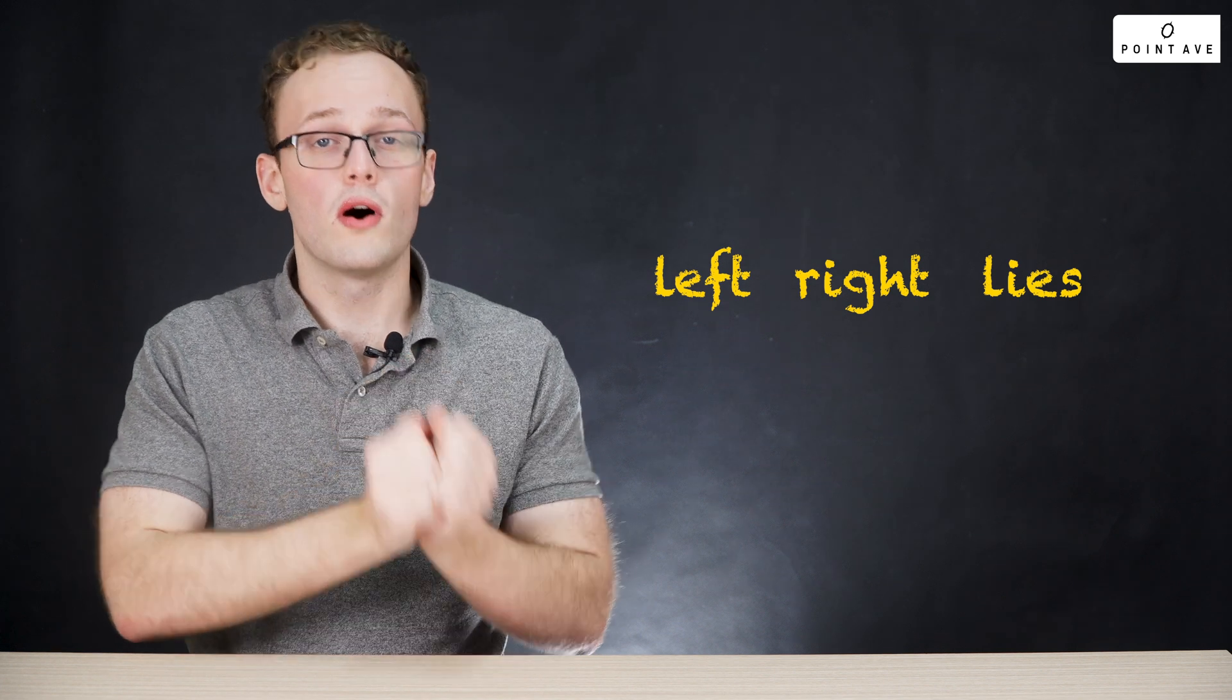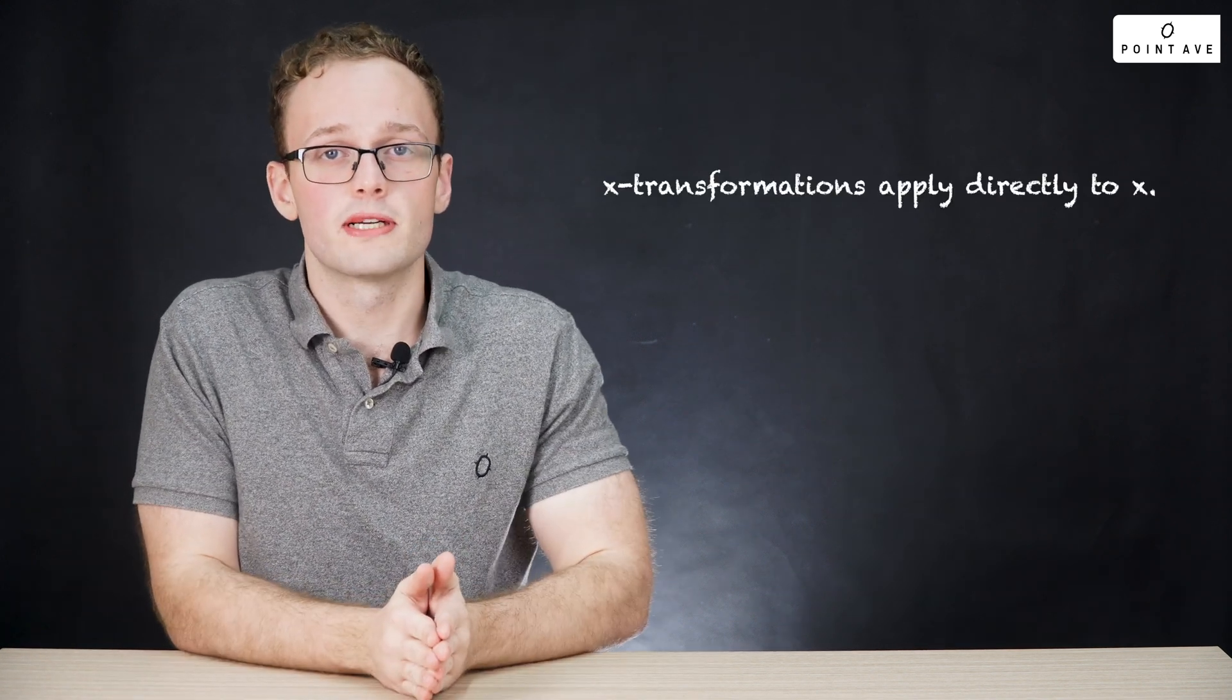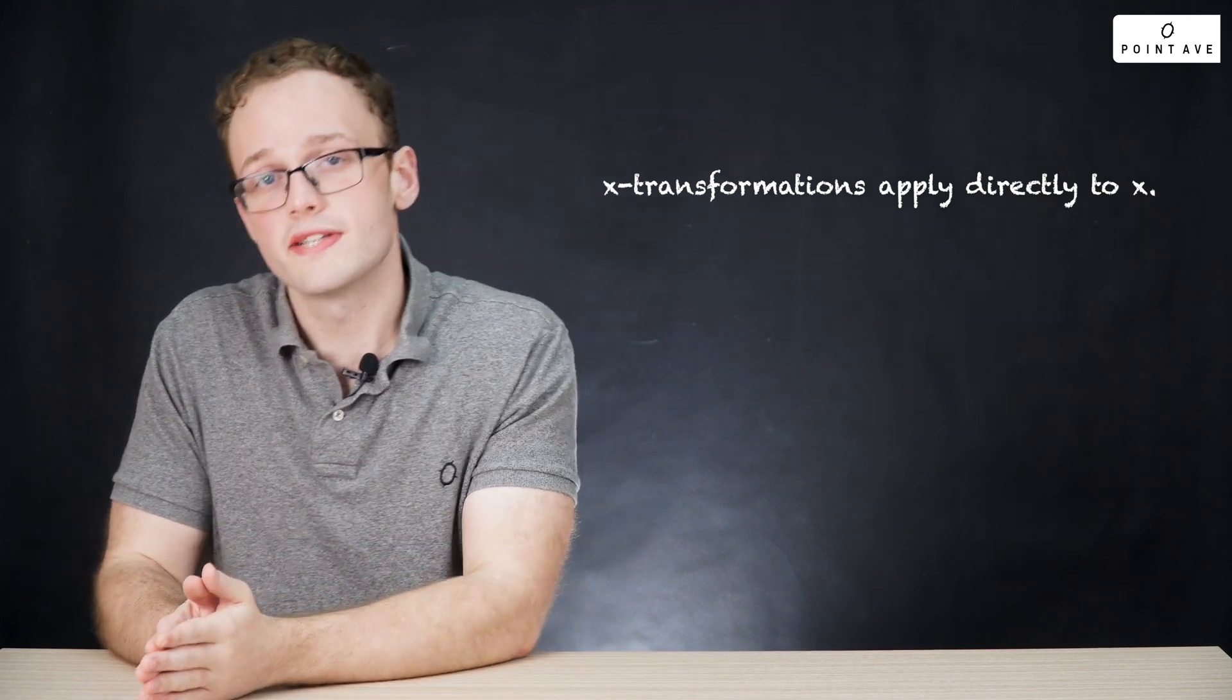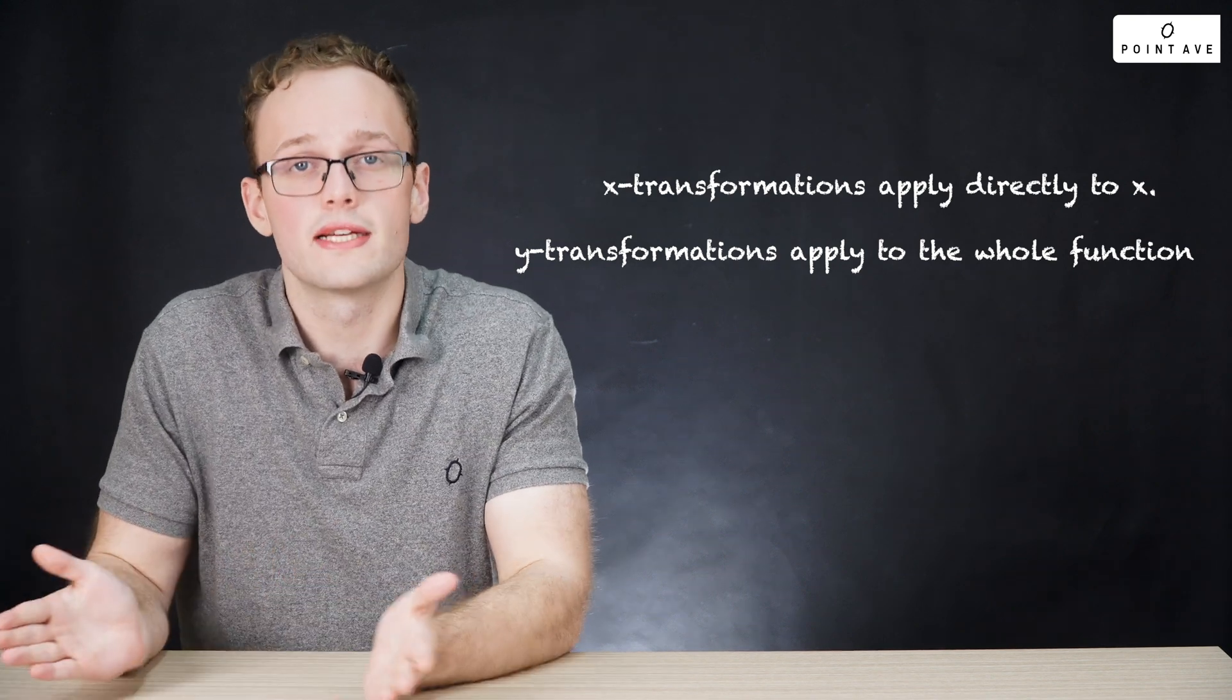Now note that this is for all x transformations and not for any y transformations. Next, why is the negative 2 inside of the square, x minus 2 squared versus x squared minus 2? This gets at another key distinction between x and y transformations. For x transformations, the transformation applies directly to x, or inside of the parentheses. For y transformations, the transformation applies to the whole function, or outside of the parentheses.